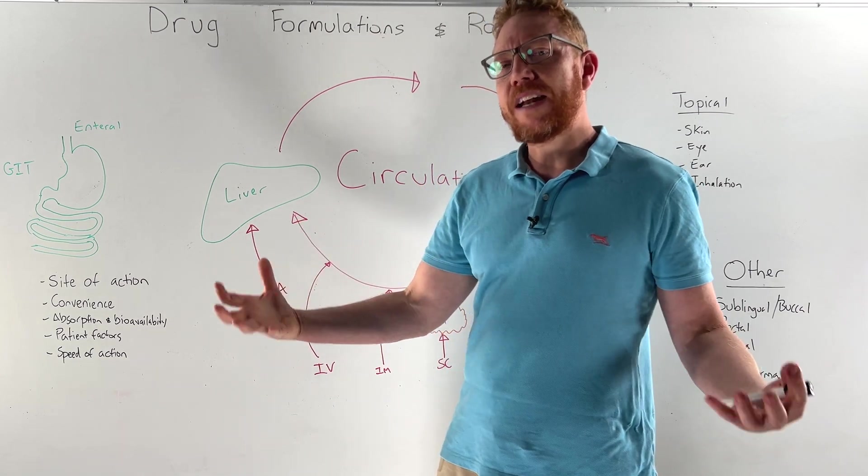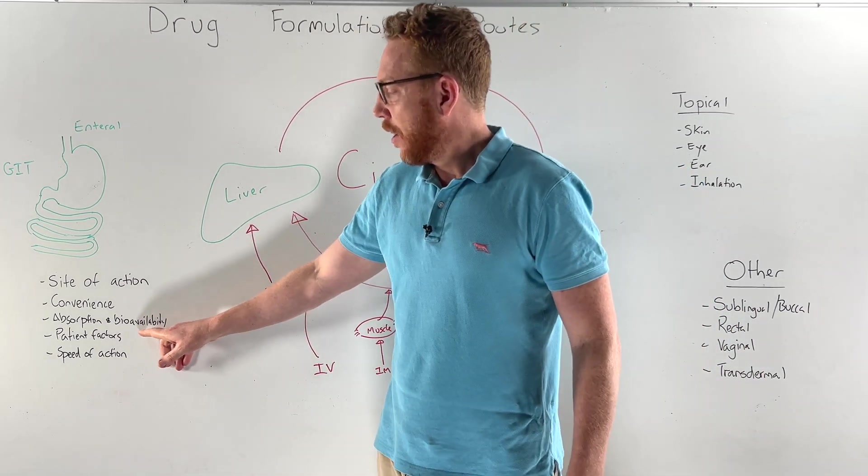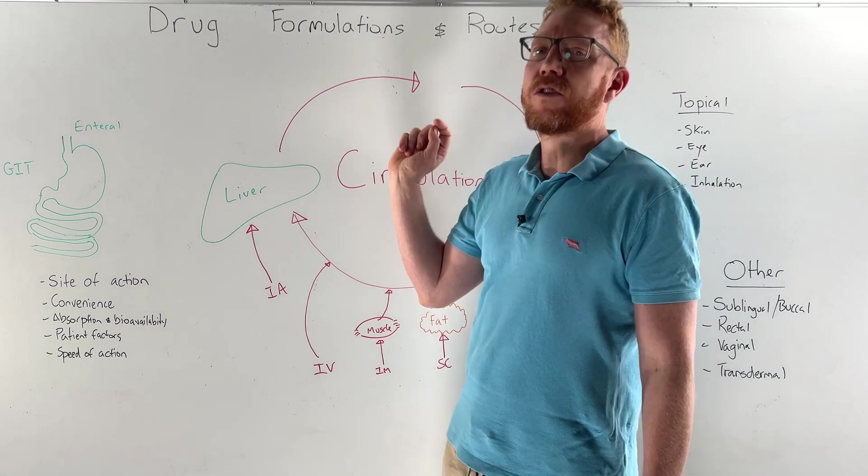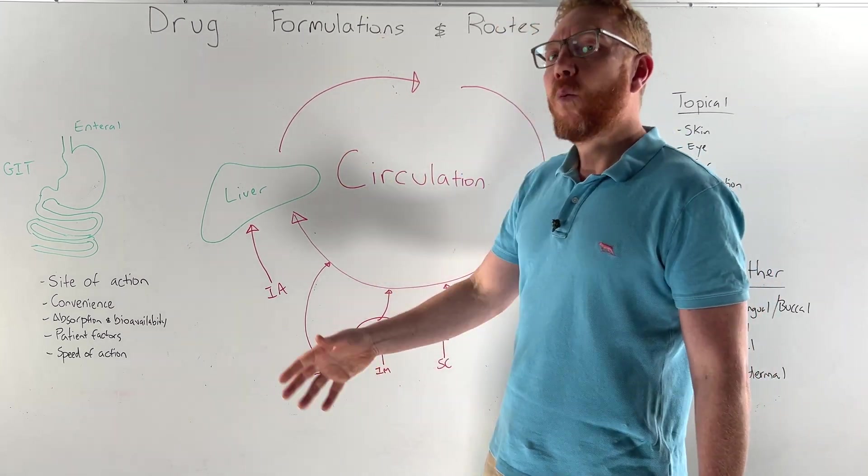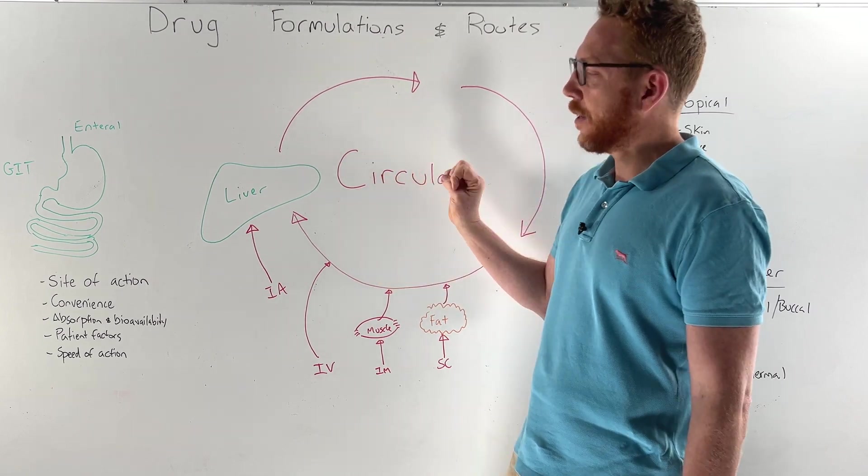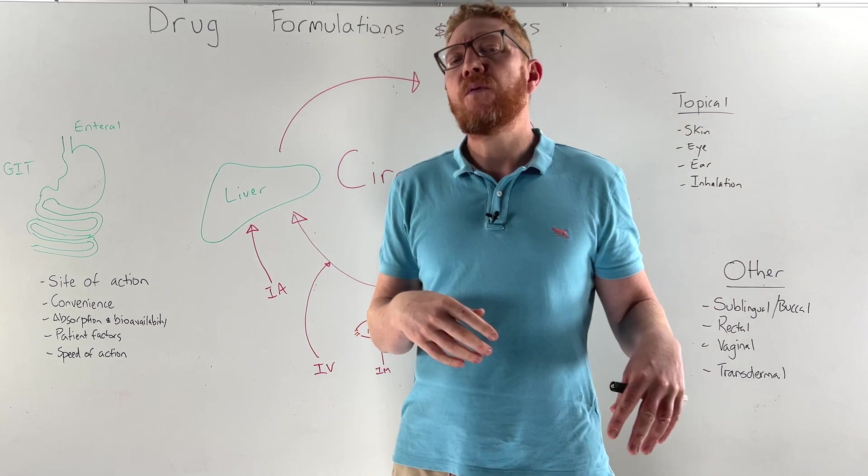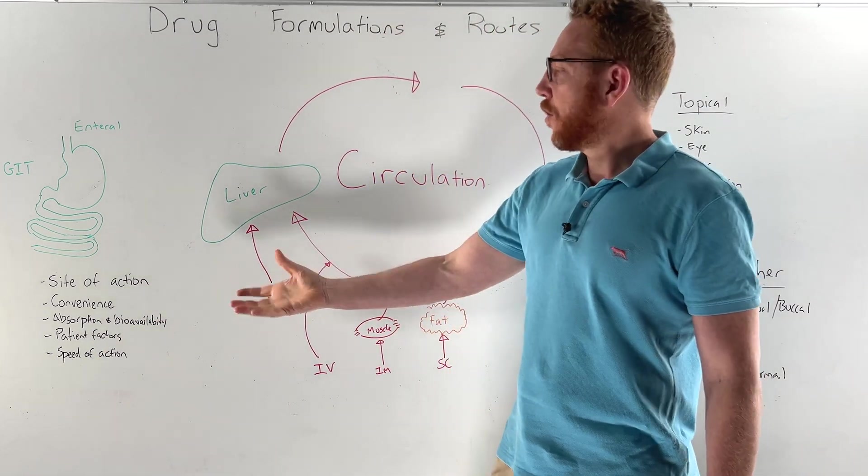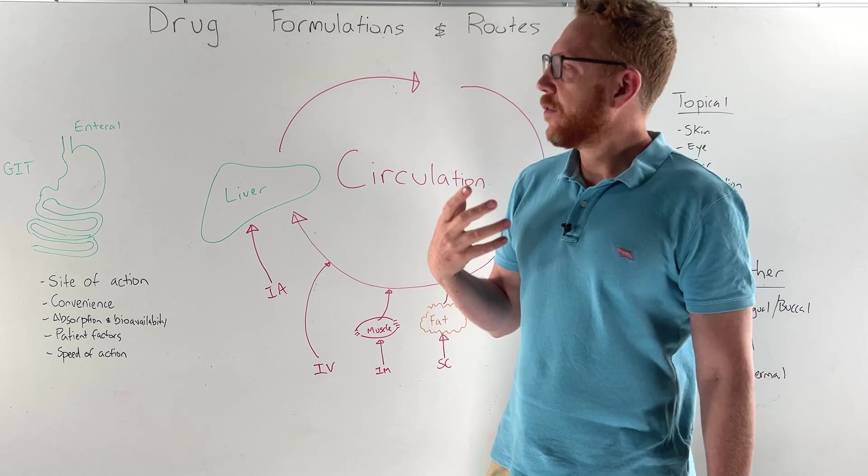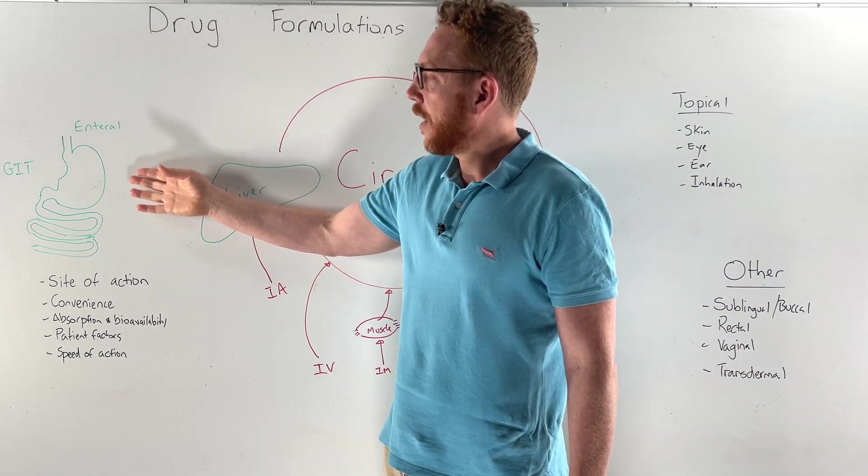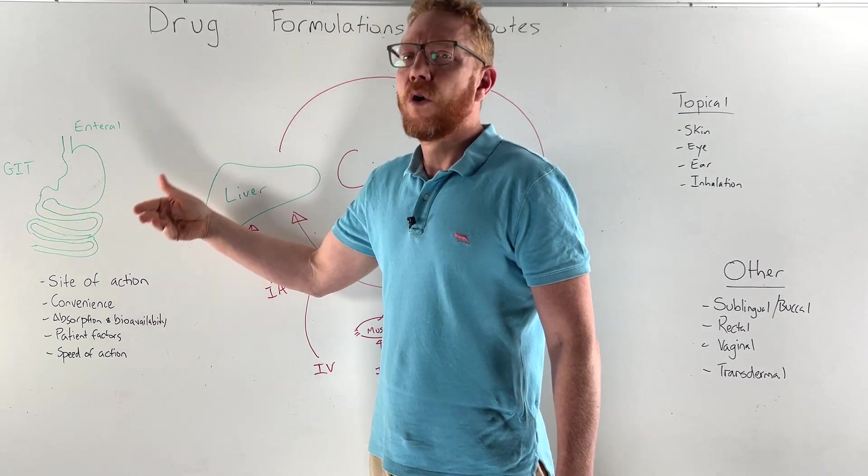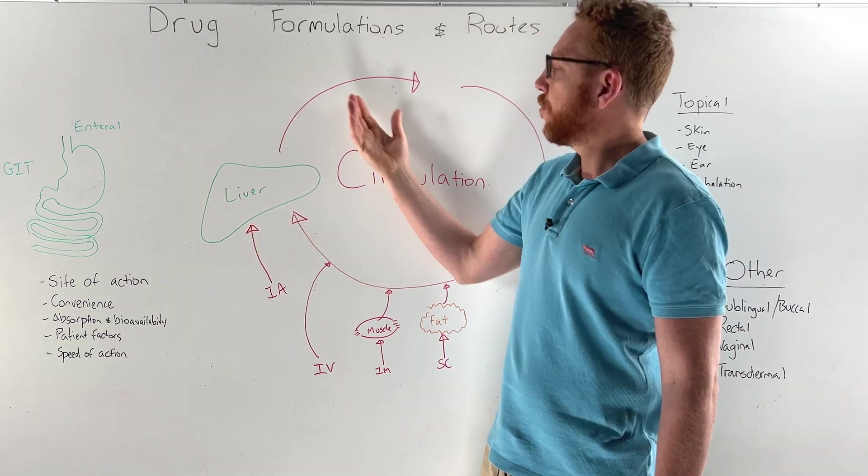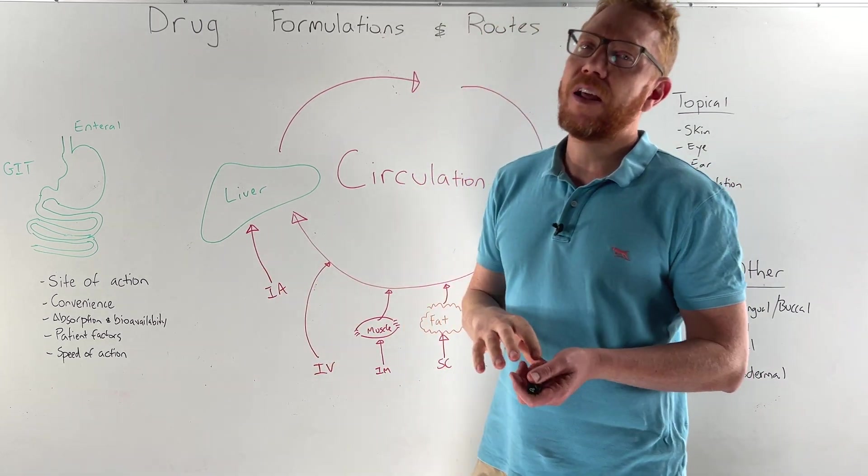Next we need to consider absorption - getting it from where we administer it into the body, particularly the bioavailability. Bioavailability basically means of the dose we give the patient what percentage makes it into the circulation. For instance if we give a medication IV 100% will be bioavailable in the circulation, whereas topical medications won't really reach the circulation so they'll have low bioavailability. Some medications don't get good access into the circulation with different routes. For instance if you give insulin or glyceryl trinitrate through the oral route it has very poor absorption or gets deactivated, or once it comes through the gastrointestinal tract and reaches the liver, the liver metabolizes it and turns it off and it doesn't reach the circulation. So that's a consideration we have to have and maybe consider a different route.